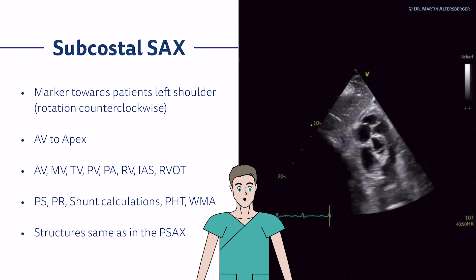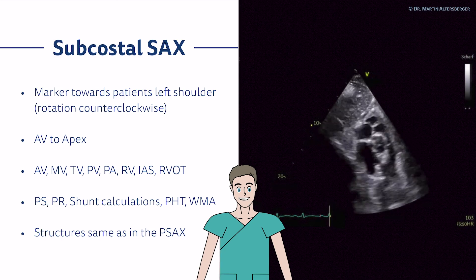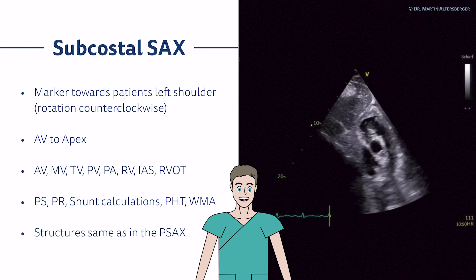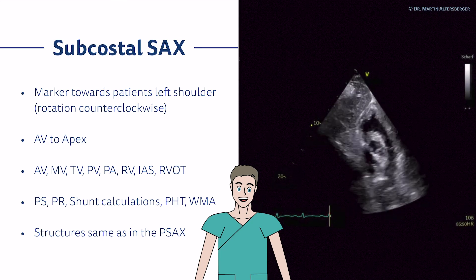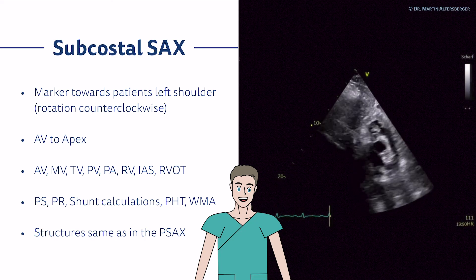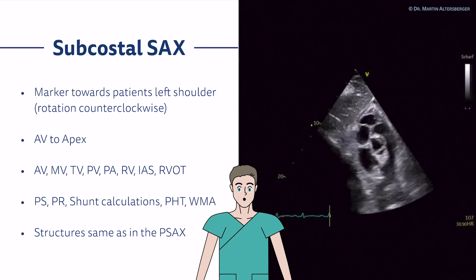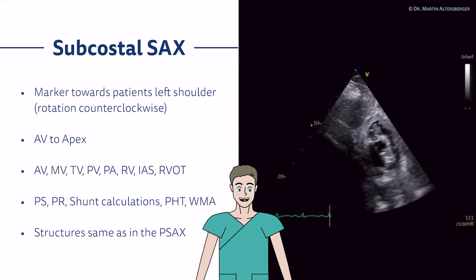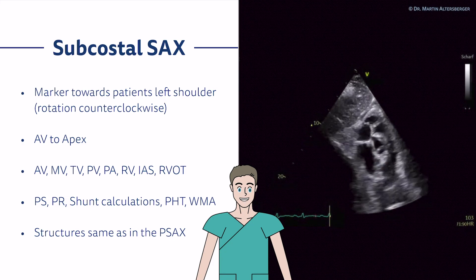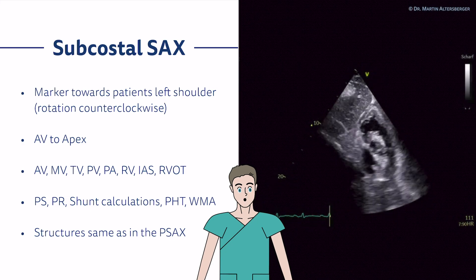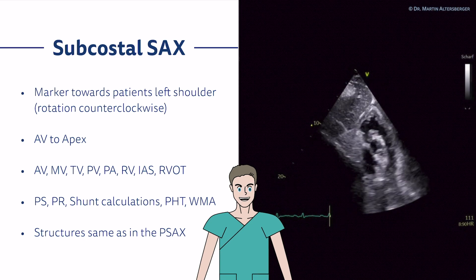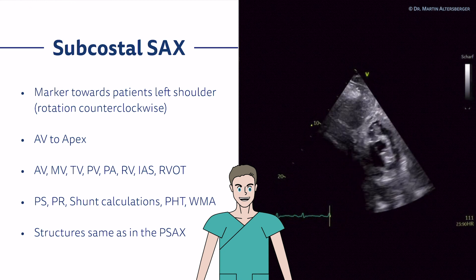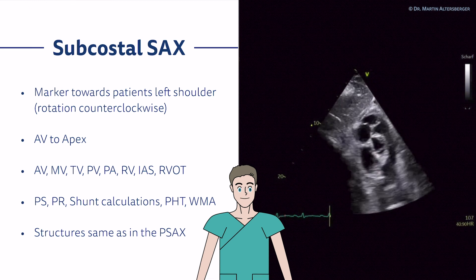You can move from the aortic valve to the mitral valve and visualize the tricuspid valve, the pulmonic valve, the pulmonary arteries, the right ventricle, the interatrial septum, and the RVOT. You can assess for pulmonic stenosis and pulmonary regurgitation, use it for shunt calculation as you would with QP/QS in the parasternal and apical views, and even look for wall motion abnormalities when you have an optimal view of the left ventricle from the subcostal approach — essentially the same as the peristernal approach.